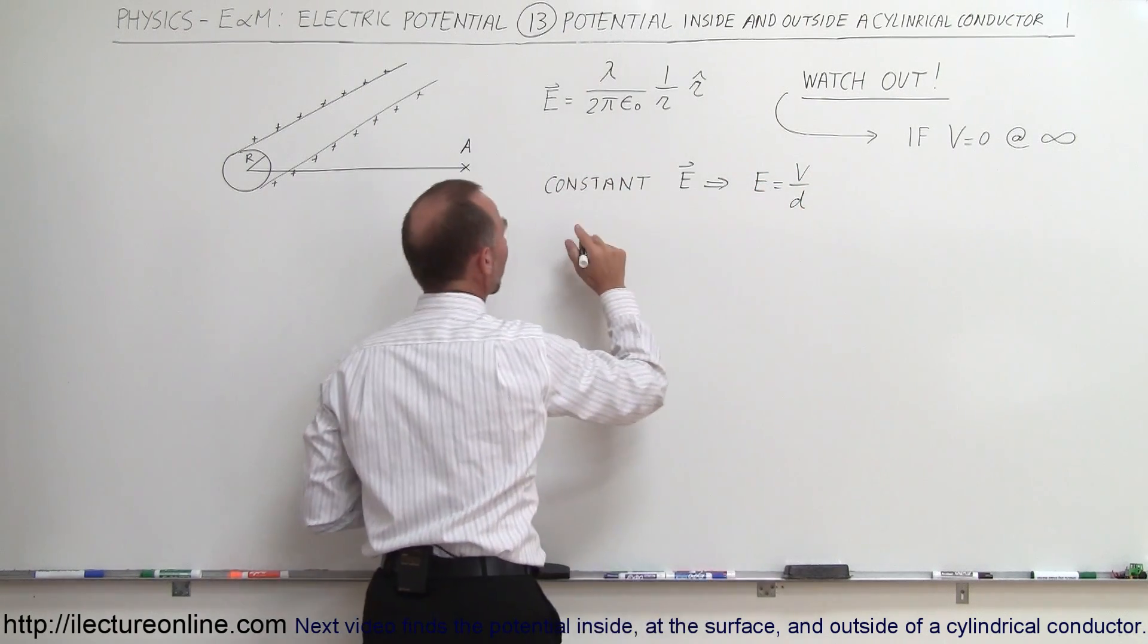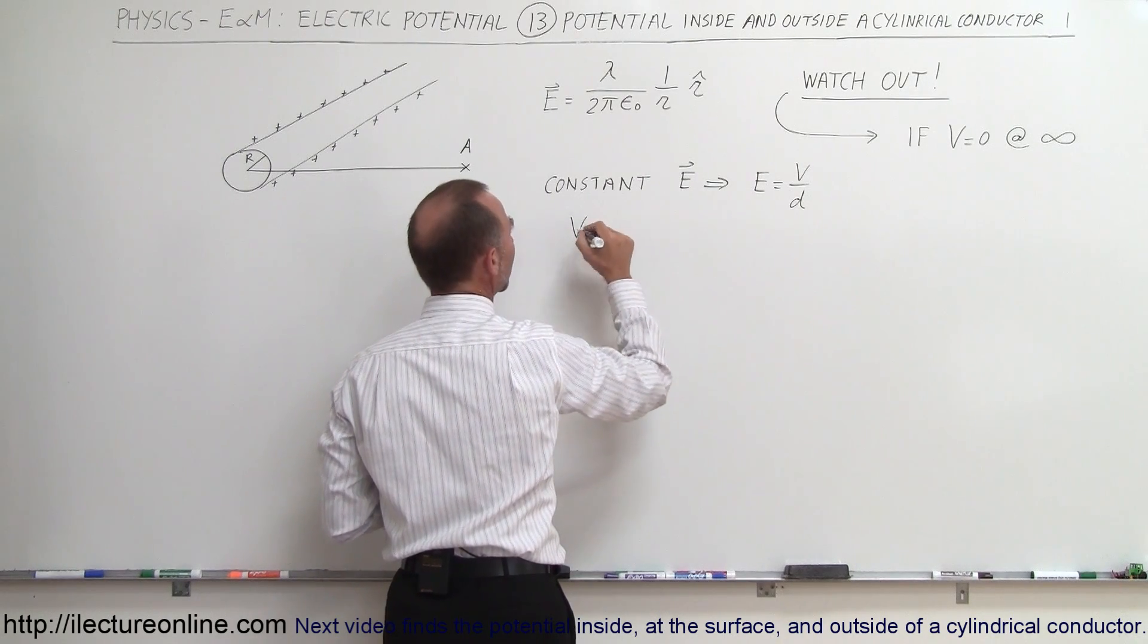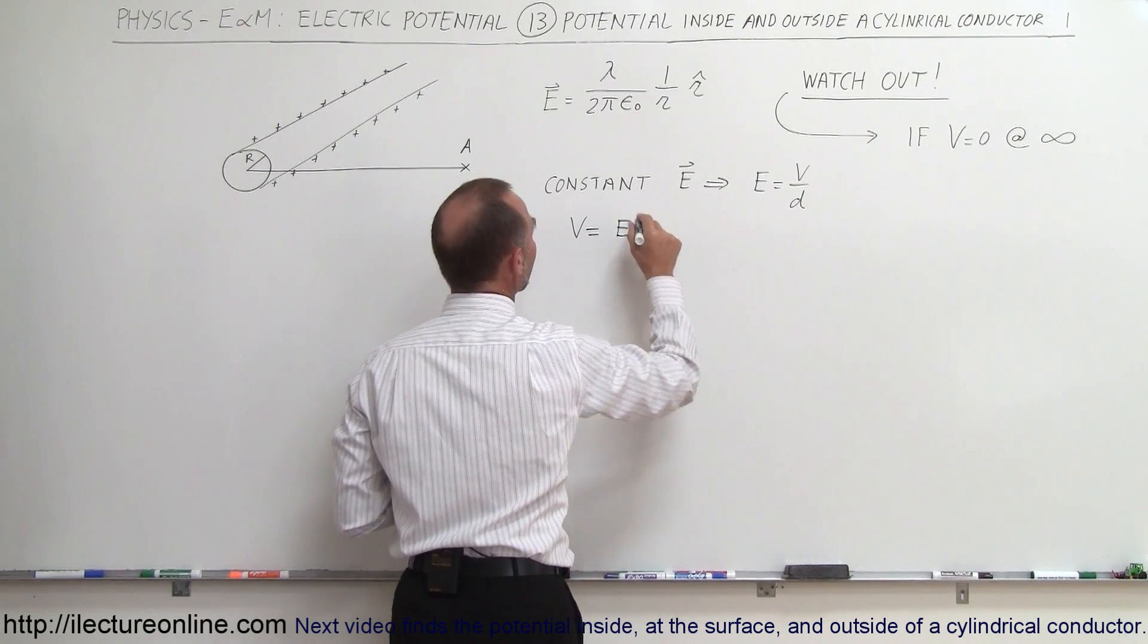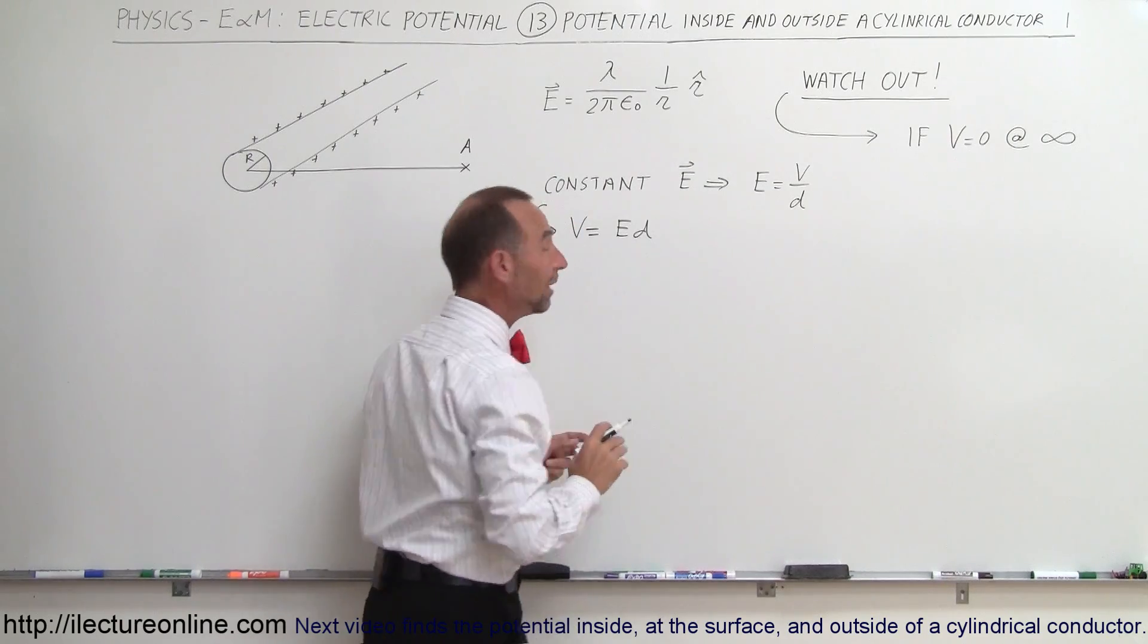And if we then rewrite that, we can say from that that V, the potential, is equal to E times D, and again, that's for a constant electric field.